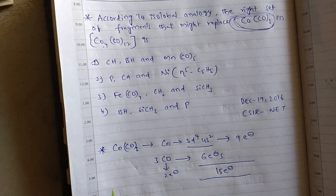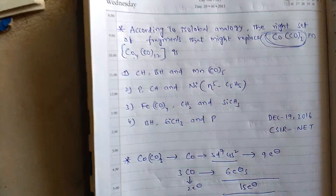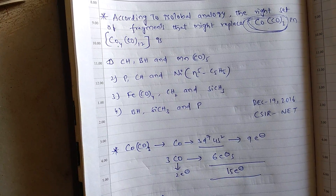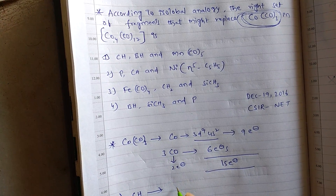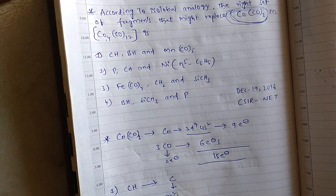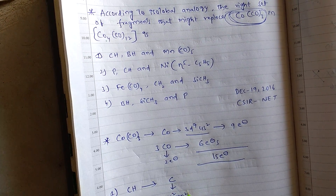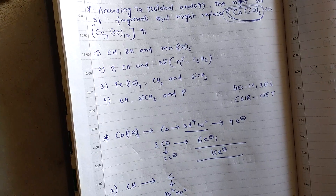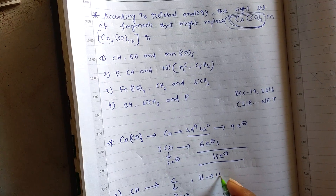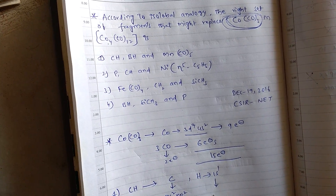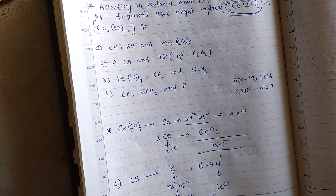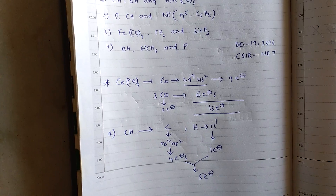Take the first option. Calculate the outer electrons of CH. Carbon has outer electron configuration NS²NP², that means it has 4 electrons, and hydrogen has 1s¹, that means it has 1 electron. So total: 5 electrons for CH.